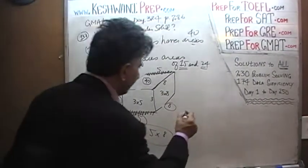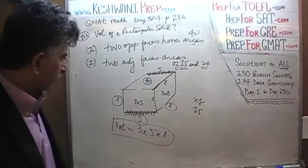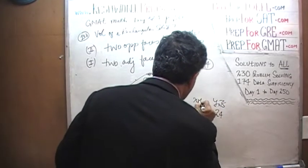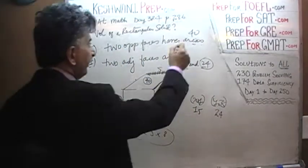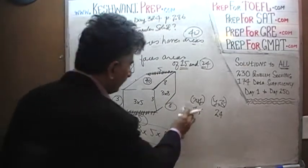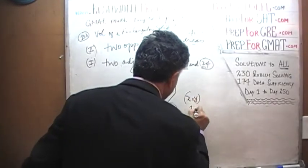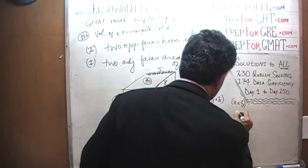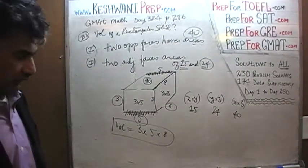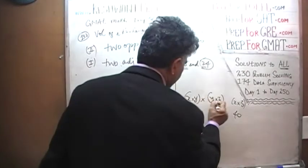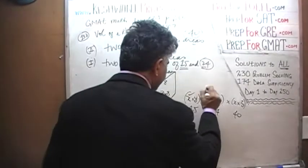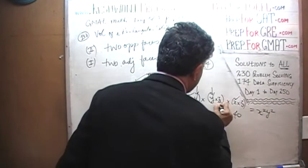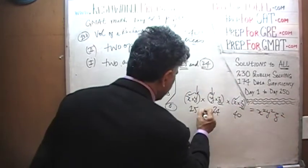We know the area of one face is X times Y equals 15. We also know the area of another face: Y times Z equals 24. And the third face: X times Z equals 40. Are you with me so far? Very good. It's important that you stay in the story. What do we get if we multiply these three quantities? We get X squared times Y squared times Z squared, which equals 15 times 24 times 40.